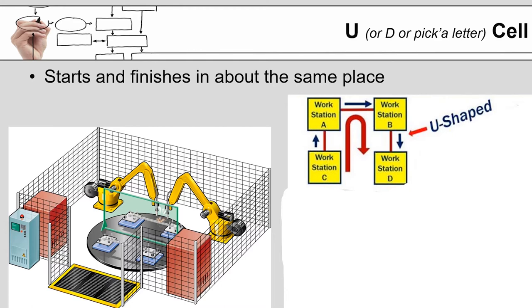I've got this labeled as the U-cell or a D-cell. I've seen that reference and anymore, it's pick a letter. It really is. Whoever you talk to, whatever consultant you're dealing with, whatever crazy academic you're dealing with who's decided that this is the new greatest way to have things move through a cell will assign a letter to it.